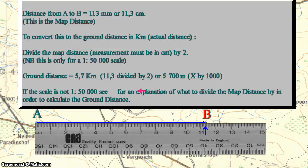The distance from A to B is equal to 113 millimeters, or 11.3 centimeters. This is the map distance. To convert this to the ground distance in kilometers, divide the map distance by two.